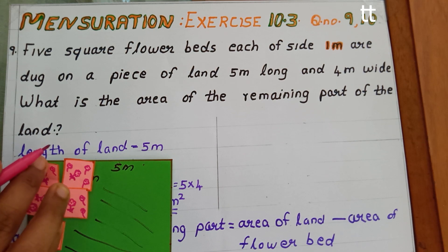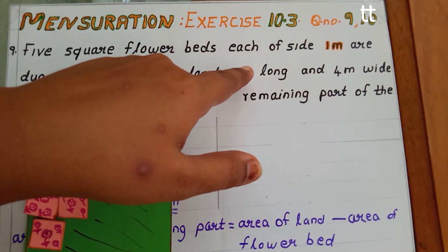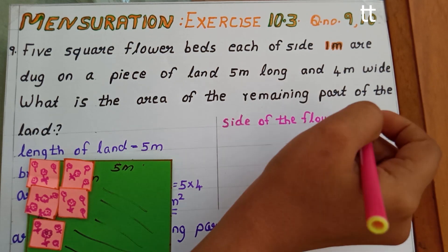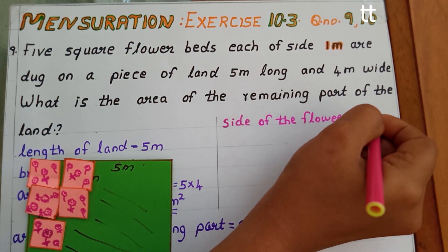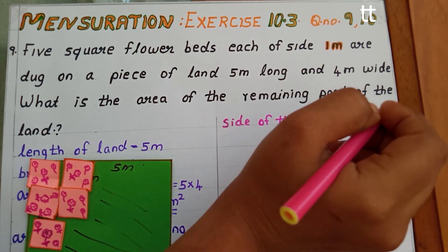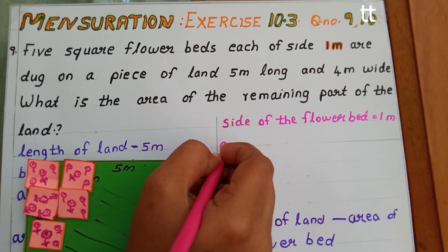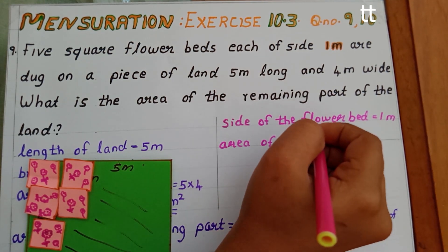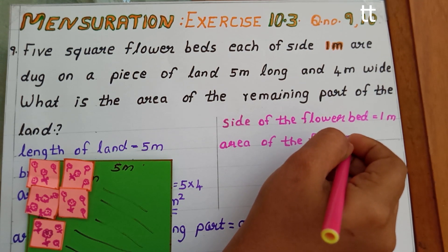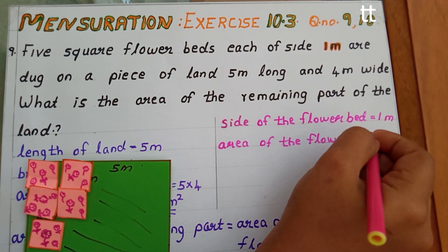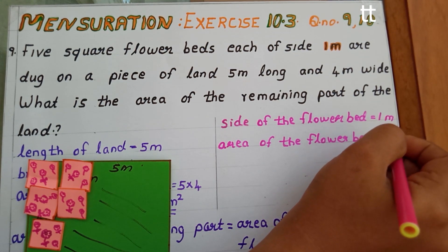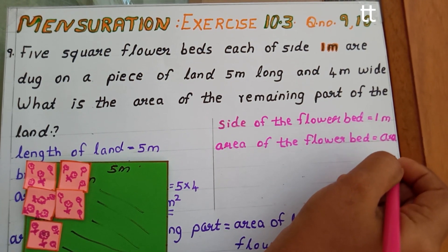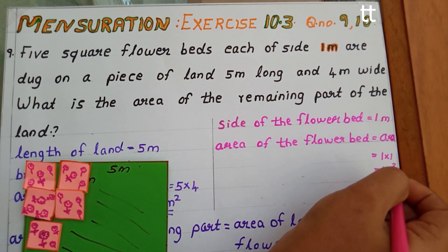Next we can find the area of the flower bed. Each flower bed is square with side 1 meter. Side of the flower bed equals 1 meter. Area of the flower bed equals a × a equals 1 × 1 equals 1 meter square.